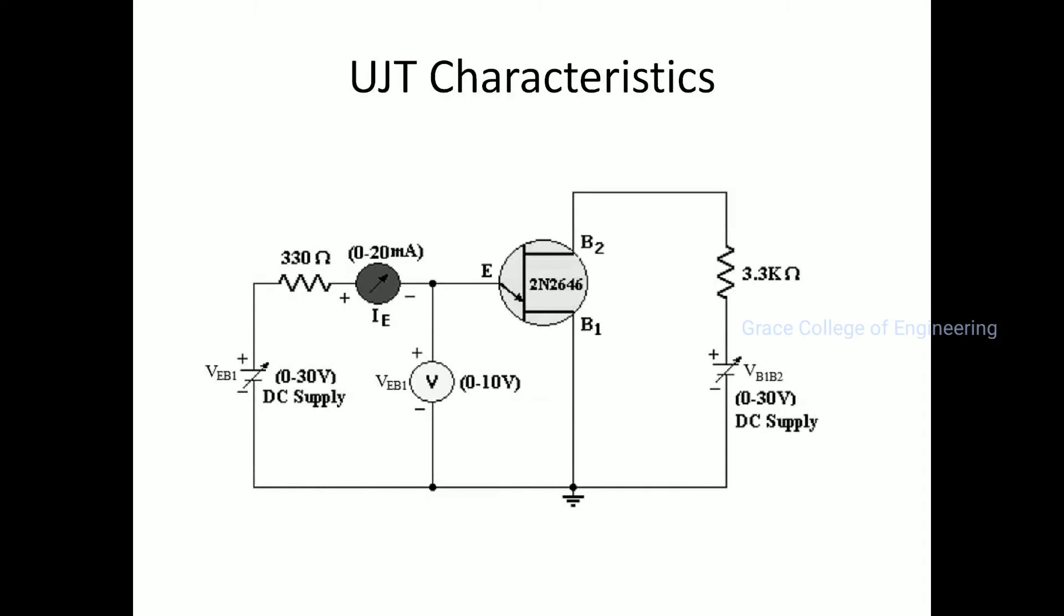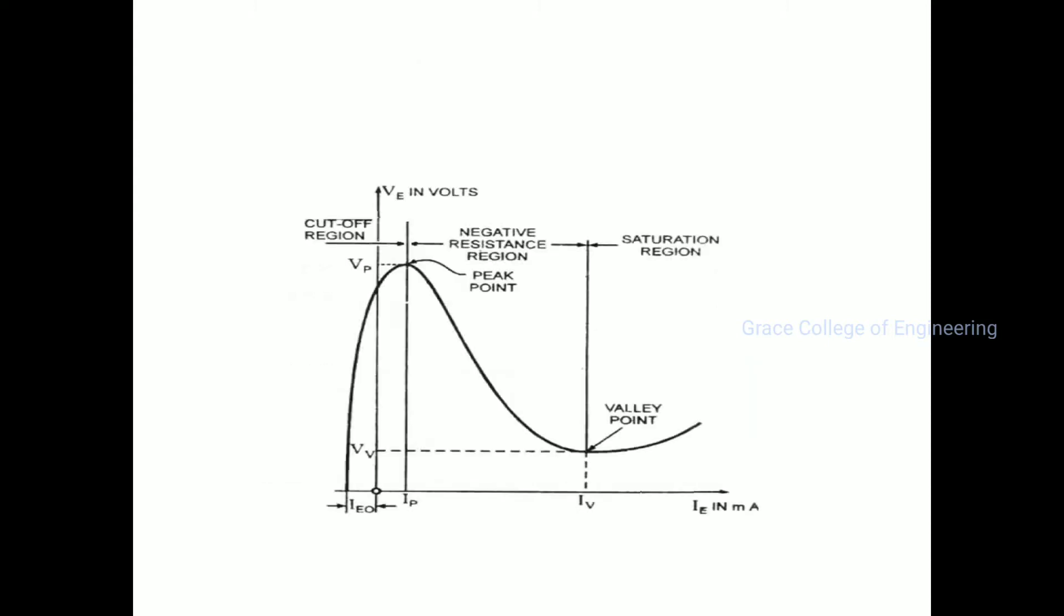In forward bias, the positive potential is at base 1 and higher. This is the UJT characteristics circuit diagram, showing emitter to base 1 voltage measurement and emitter current. This is the model graph.